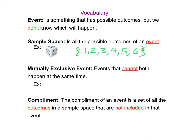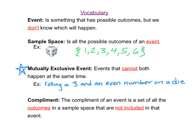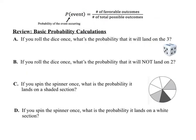Mutually exclusive events are events that cannot both happen at the same time. This definition is really important and we're going to be working with mutually exclusive events in this lesson. An example would be rolling a 3 and an even number on a die. If we roll a die, it's impossible for the number to be a 3 as well as an even number, because 3 is not even. Hence, rolling a 3 and rolling an even number would be mutually exclusive events. Our last vocabulary word is complement — the set of all outcomes in a sample space that are not included in that event. For example, what's the probability of not rolling a 5.